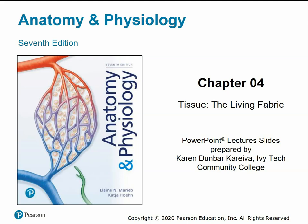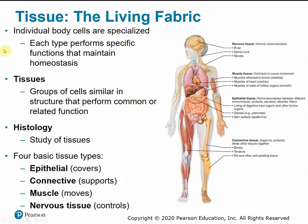This is chapter four on tissue, the living fabric. Continuing our progression through those levels of structural organization, we started with chemistry, talking about atoms and molecules, then progressed to cells. When multiple cells work together to perform a similar function, they form tissues. Individual body cells are specialized to perform specific functions to help maintain homeostasis. Tissues are groups of cells similar in structure that perform common or related functions. Histology is the study of tissues.